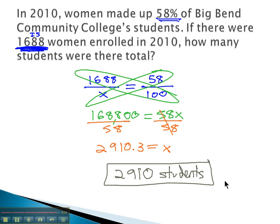We set up these proportions by remembering: 'of' represents all of the data, and 'is' is the part that is interesting. The proportion is over of equals percent over 100 allows us to answer the question.